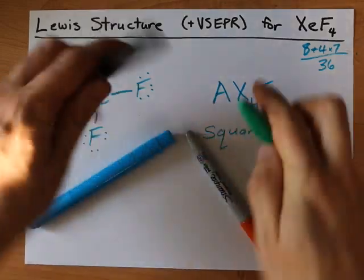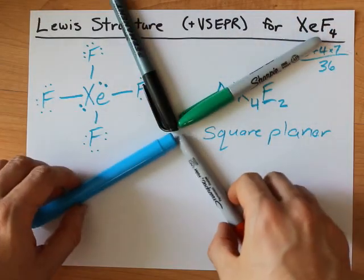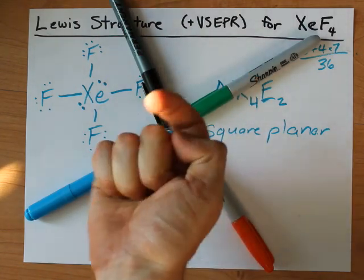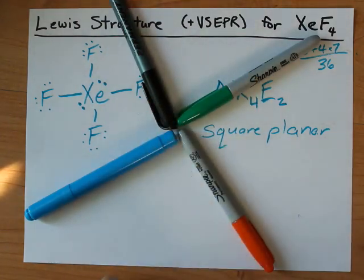All of the F's are at 90 degrees to each other. And I have a lone pair coming out at you from the page and a lone pair going into the page as well.